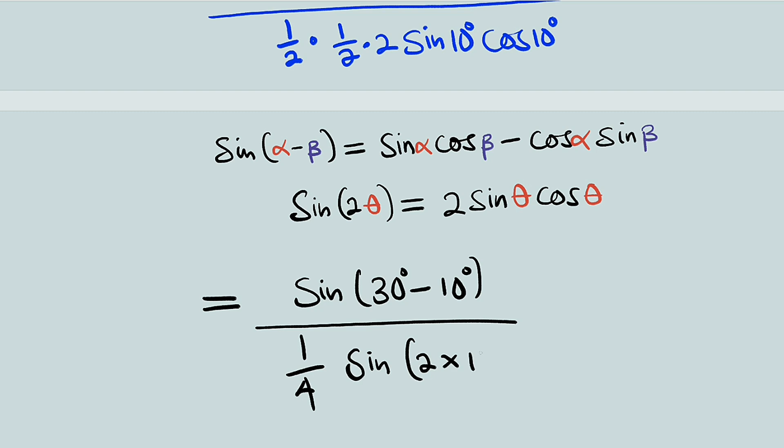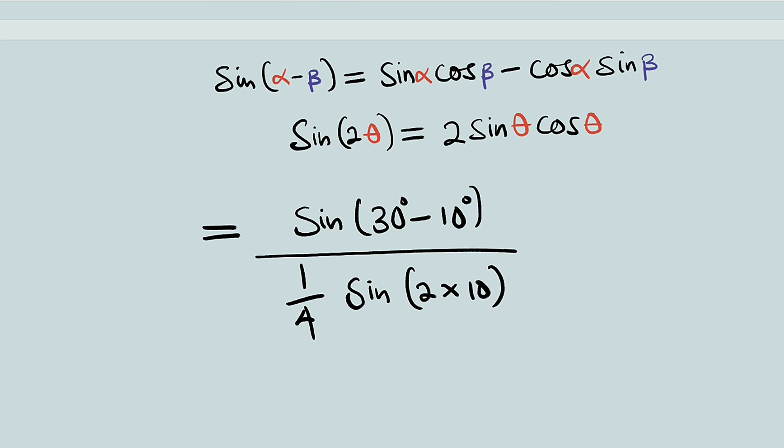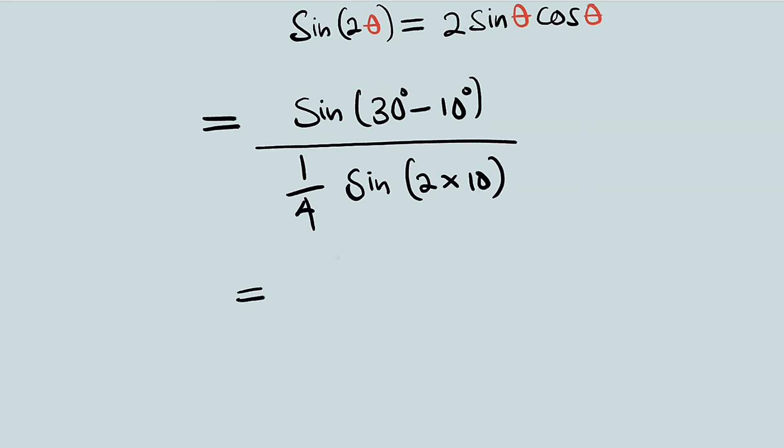This is equal to sine of 20 degrees because 30 minus 10 is 20, divided by 1 over 4 multiplied by sine of 20 degrees as well.